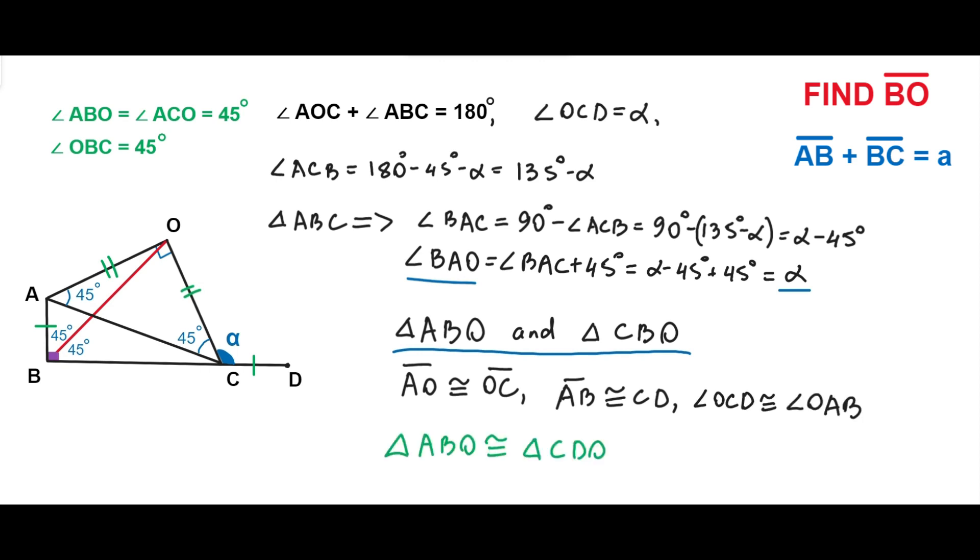Consequently, the triangles ABO and CDO are congruent according to the triangle congruence side-angle-side rule.